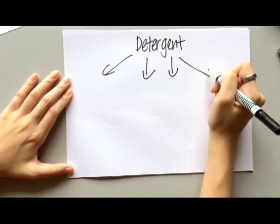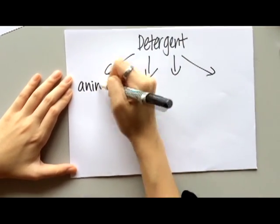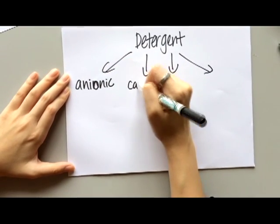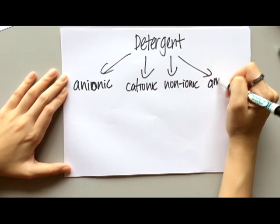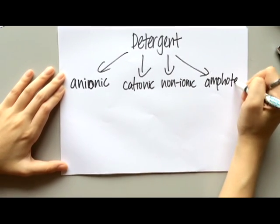There are four main classes of detergents, which are anionic, cationic, non-ionic, and amphoteric. But most detergents have a negative ionic group, which are named as anionic detergents.